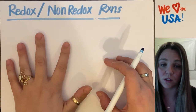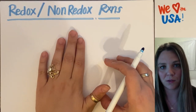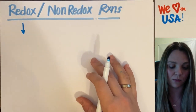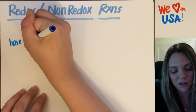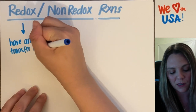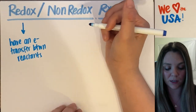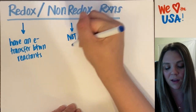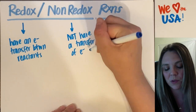New words to describe other types of reactions. We have redox reactions and non-redox reactions. A redox reaction is a reaction that does have an electron transfer between the reactants. A non-redox reaction would not have a transfer of electrons between reactants.